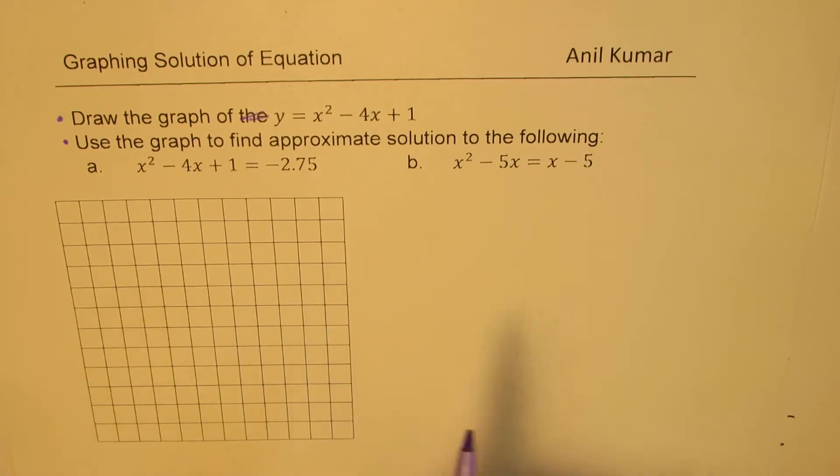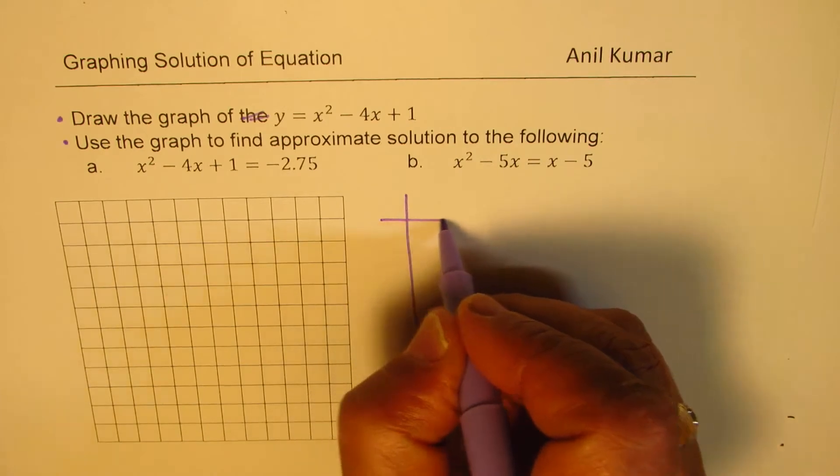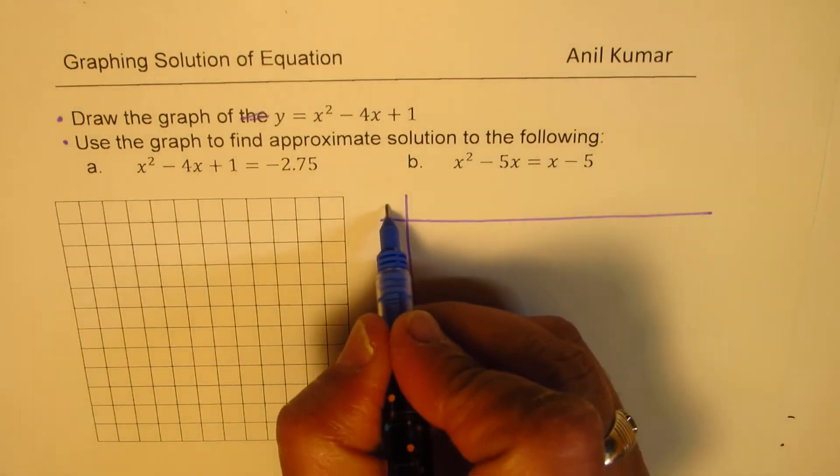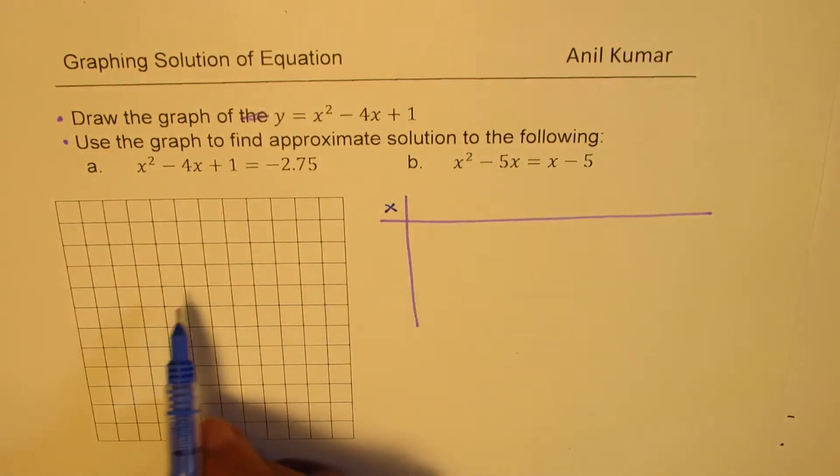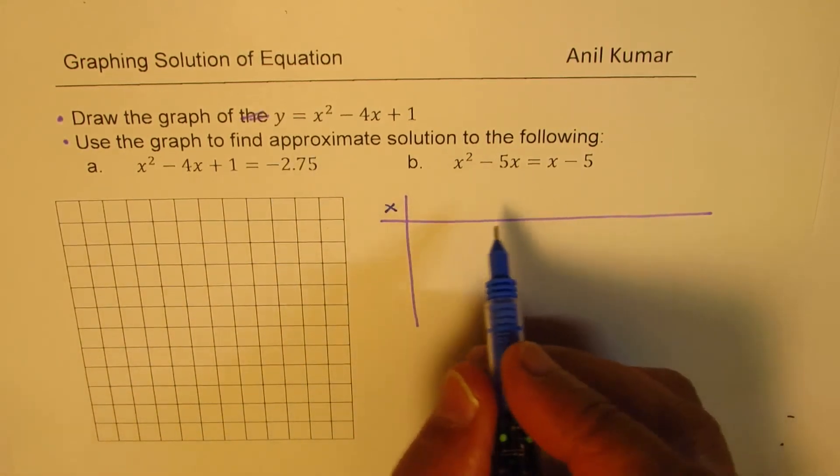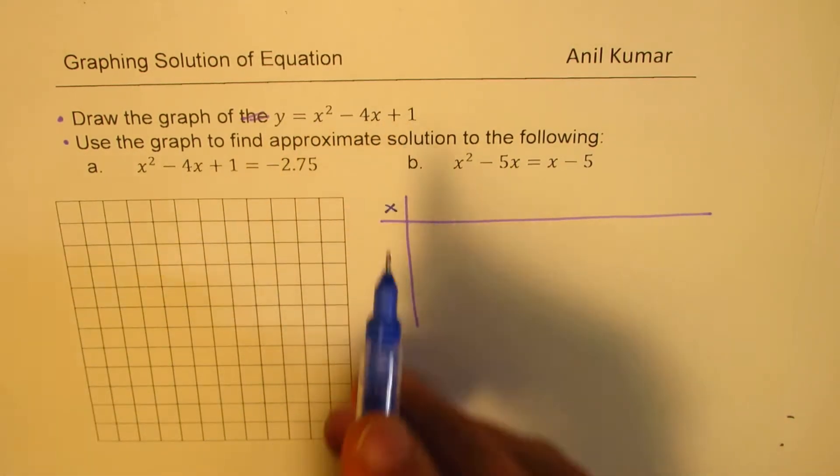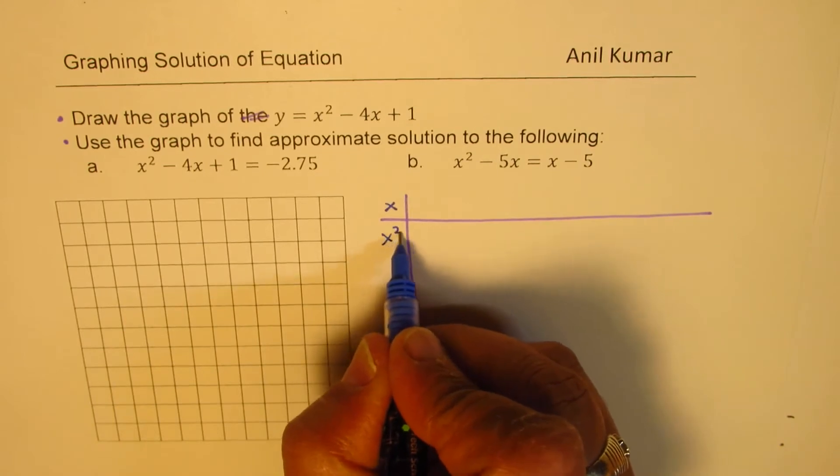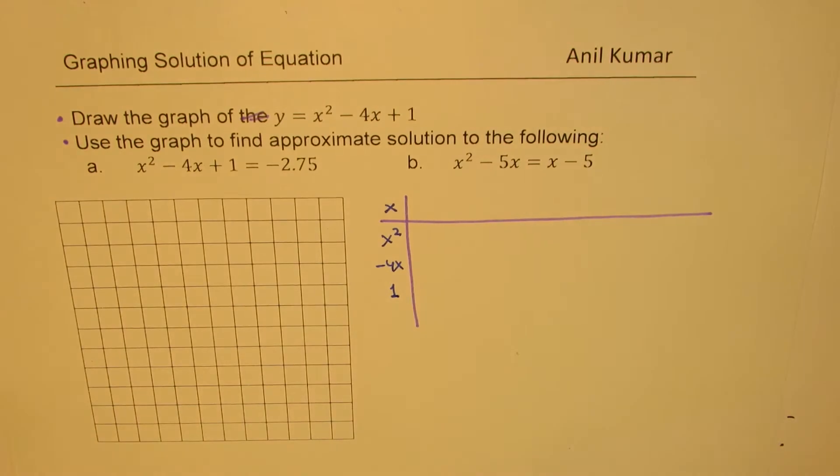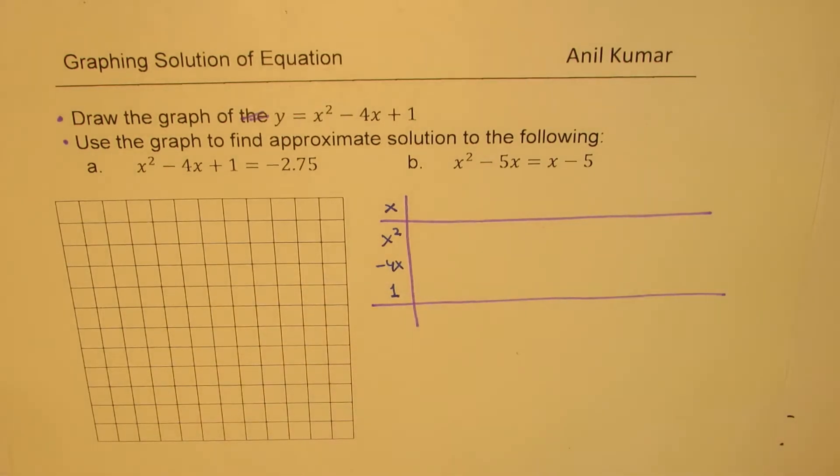Let us first sketch the graph. To sketch the graph, we'll adopt a very simple strategy. We'll take some values of x, calculate the corresponding y points, and then plot them on the Cartesian plane. So x will take values like we will begin with 0. y is equal to x squared minus 4x plus 1. We'll calculate x squared, we'll calculate minus 4x, and we'll add 1 to it. Once that is done, we'll get the y values. So that will give us x and y coordinates.